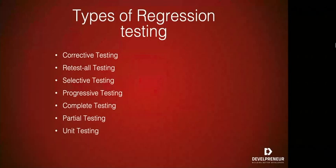Next we have selective regression testing. Here we analyze the impact of new code on the software's already existing code, and we use a subset of the existing test cases to reduce the cost and effort needed for retesting. Progressive regression testing is used in situations when modifications are added in the specifications of the product and new test cases are designed. Progressive regression testing works effectively when there are changes done in the software application specifications as well as new test cases are designed.